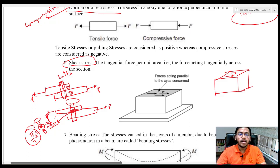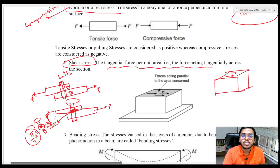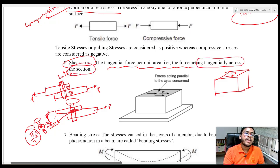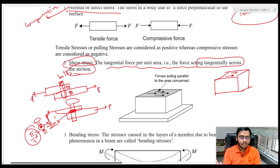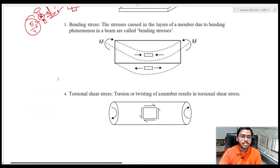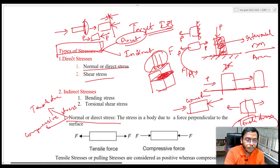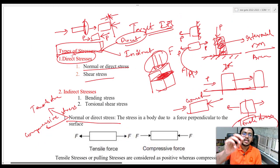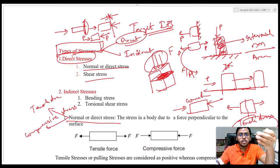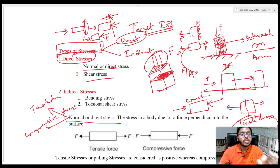The tangential force per unit area — the force acting tangentially across the section — I am calling it as shear stress. This is clear. So whatever I have taught so far — normal stress and shear stress — they are the direct stresses. If the load is applied and the stress is being developed directly in the body, that is why I am calling them direct stresses.